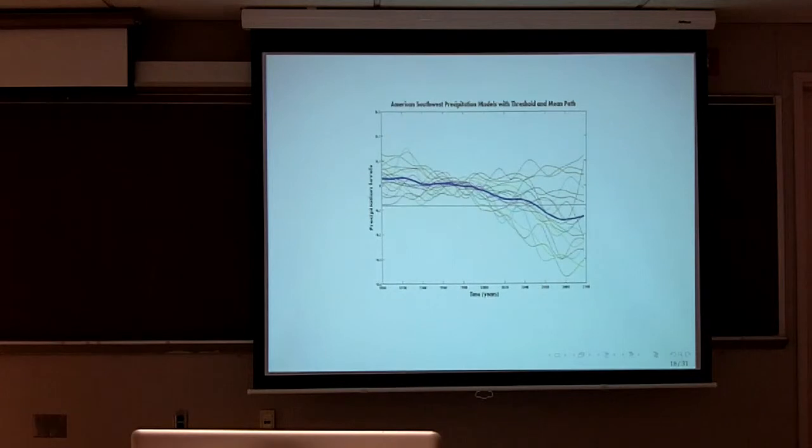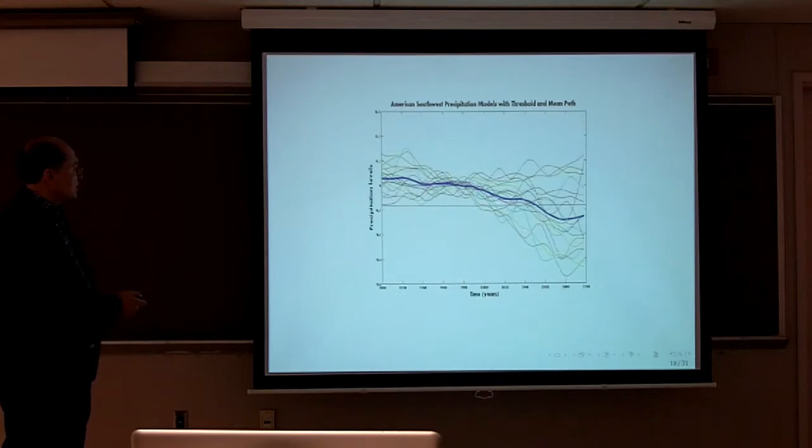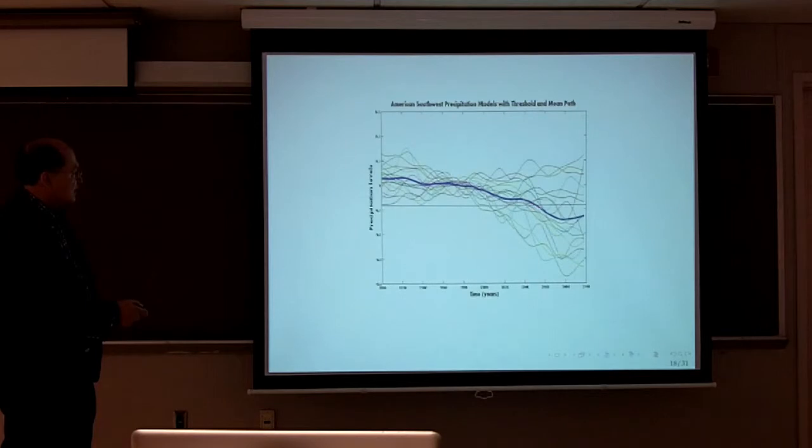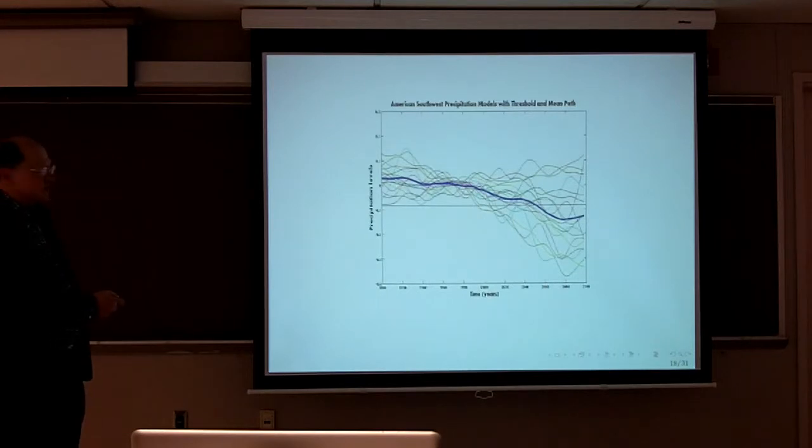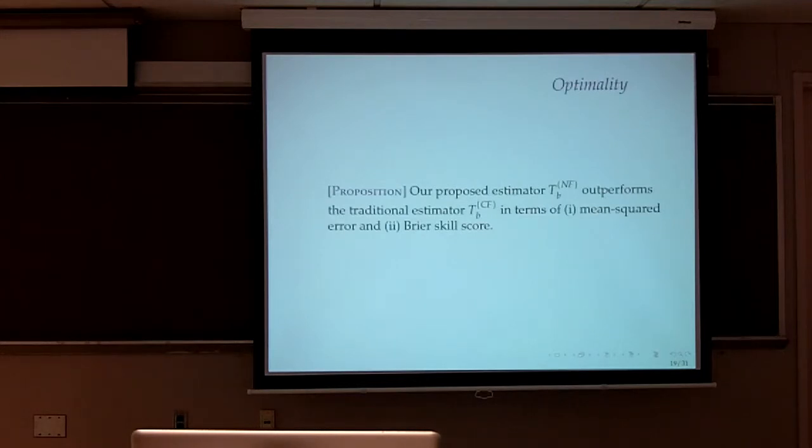This is the path of the picture of the American Southwest precipitation models. This is the threshold. The threshold is when we go below 0.09, that's when we declare a drought. You see there are 19 models. Three of them never crossed the boundary. This is the average path. Drought would be declared to exist in the Southwest around the year 2048, 2040, based on the average path.